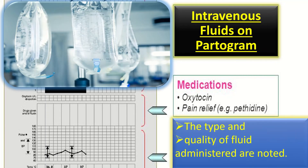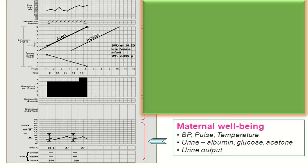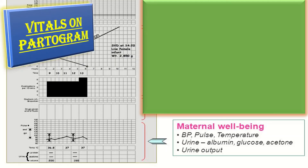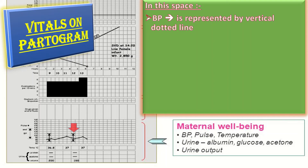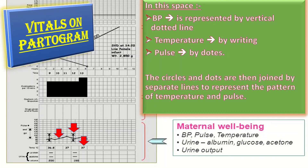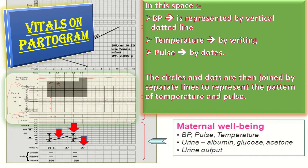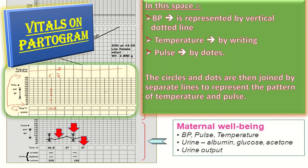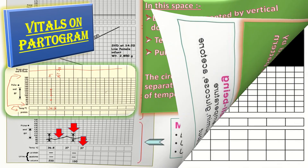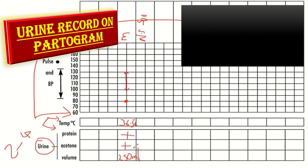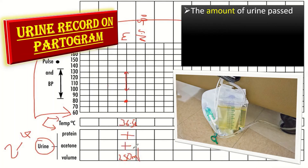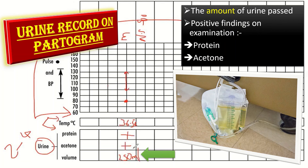For vitals on the partogram: blood pressure is represented by vertical dotted lines, temperature is written down, and pulse is recorded as dots; the circles and dots are then joined by separate lines to represent the pattern of temperature, pulse, and BP. For the urine record, the amount of urine passed is noted, and positive findings on examination of urine such as presence of protein or acetone are entered in the appropriate square for time.